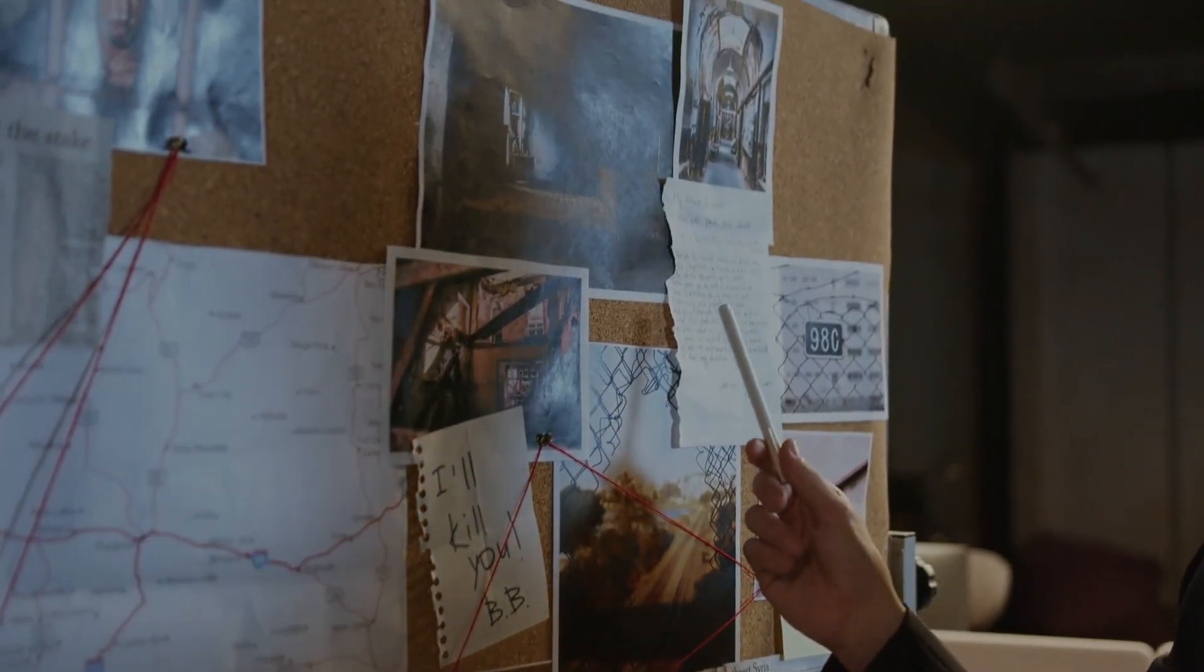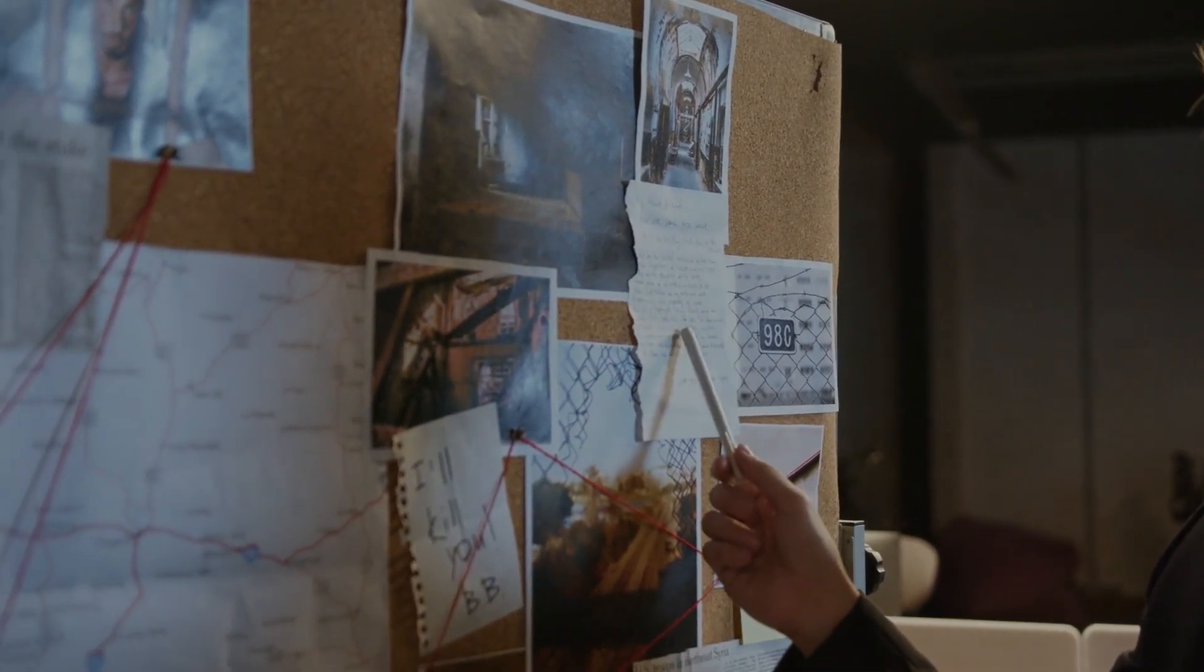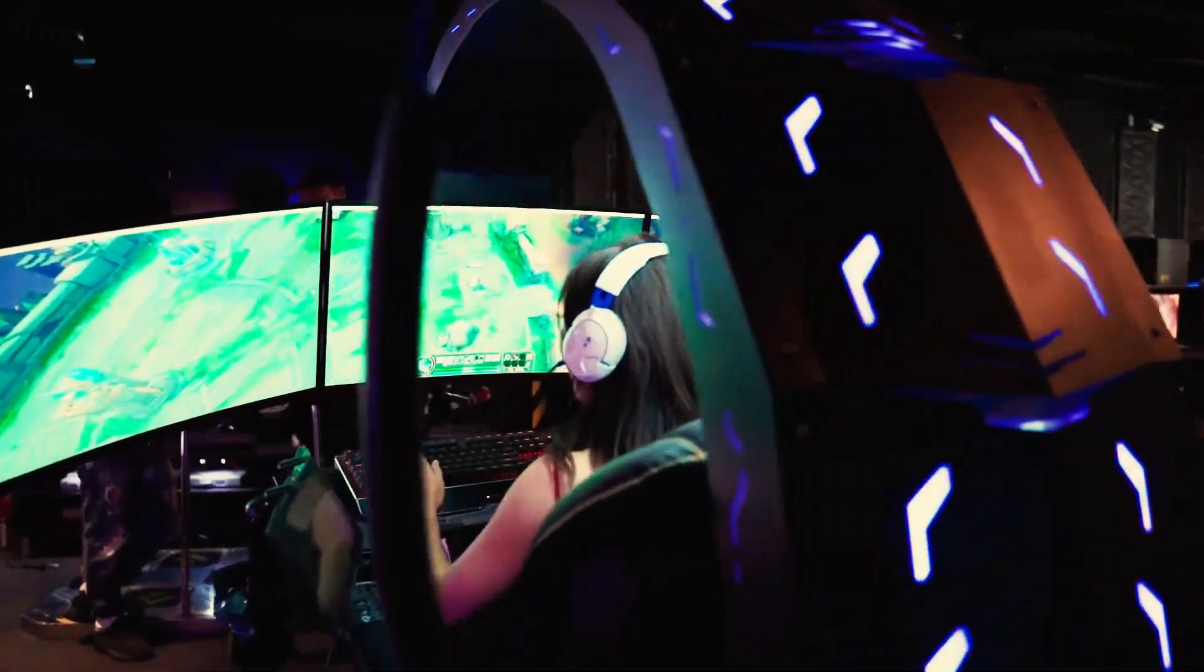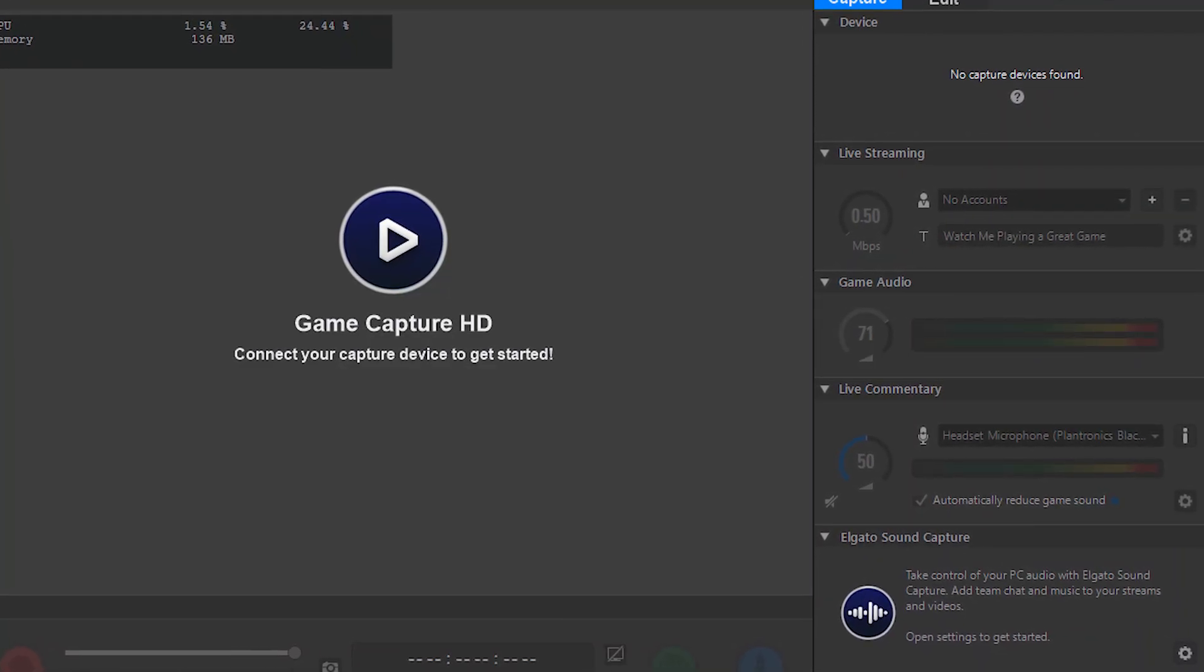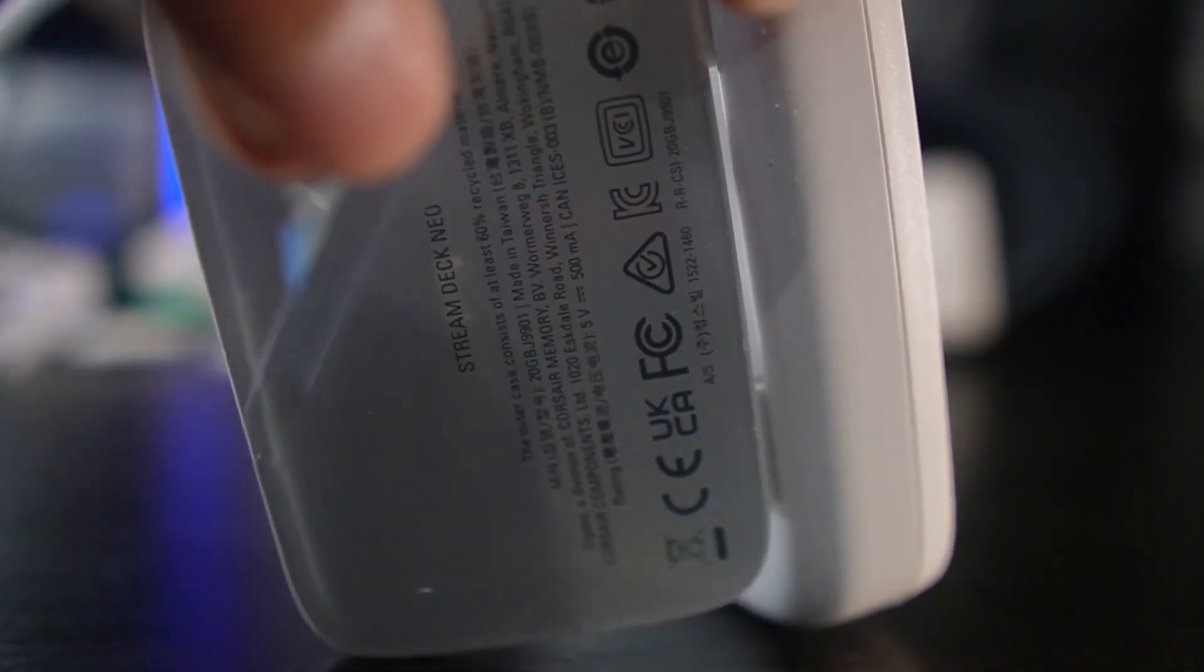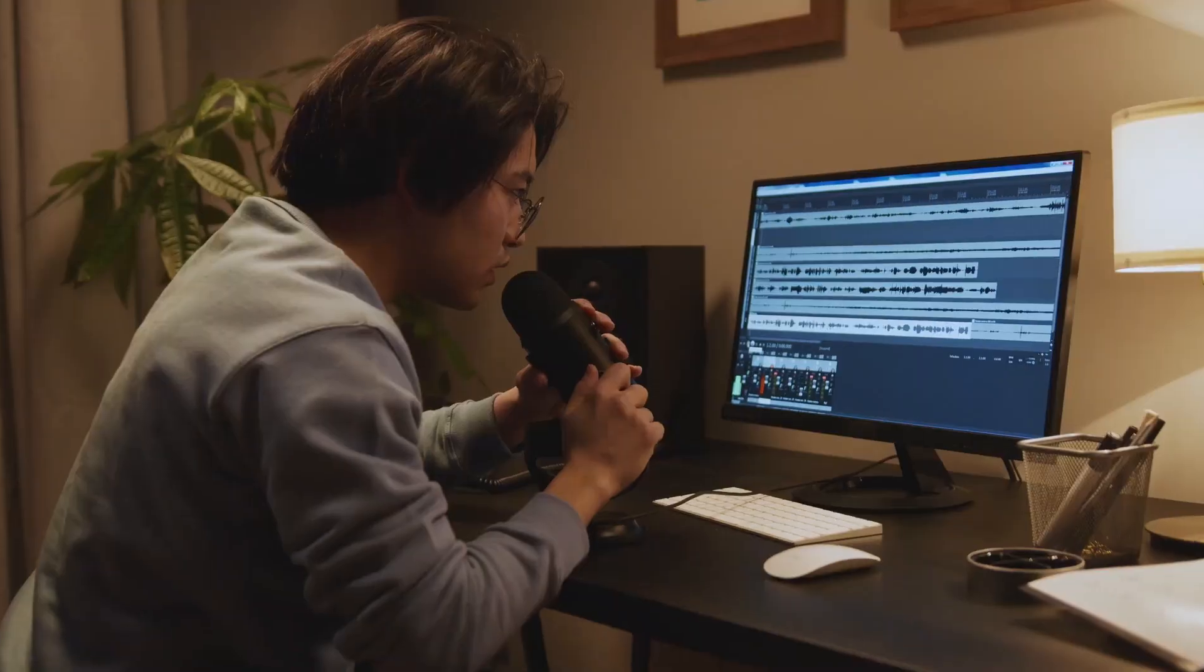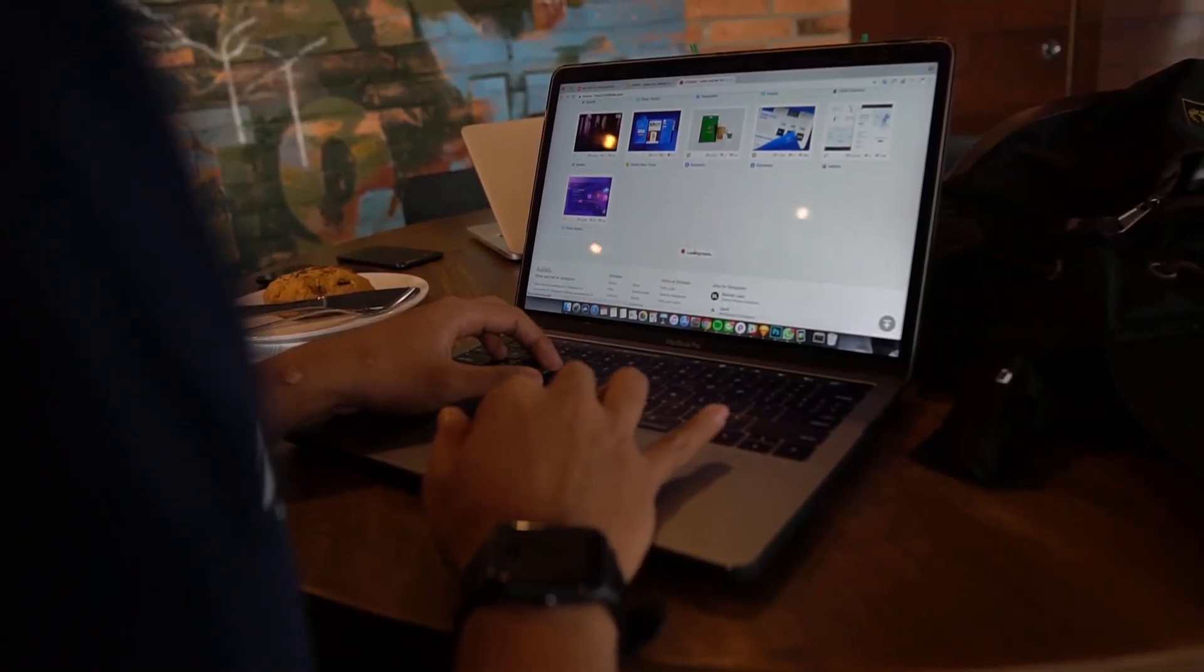Now you might be thinking, this all sounds great, but is it easy to use? The answer is a resounding yes. The Neo is incredibly user-friendly, even for those who might not be tech-savvy. The Elgato software is intuitive, with a drag-and-drop functionality that makes setting up your buttons a breeze. Plus, it integrates seamlessly with popular streaming platforms like Twitch, YouTube, and OBS Studio. I believe even beginners will find it easy to get up and running in no time.